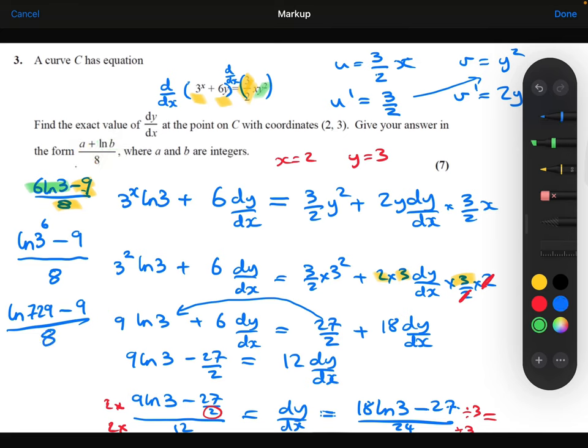Now all of this matches up. Let's just compare. The 8's on the bottom, that matches up. The A is -9, and the B is 729. So that there is my final answer.